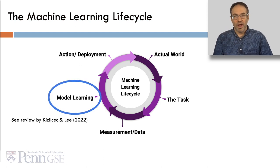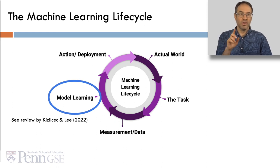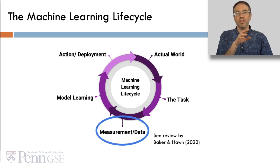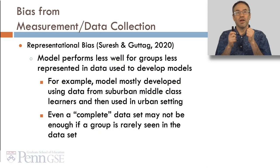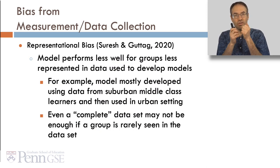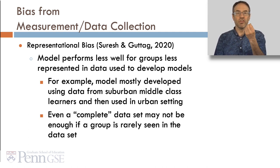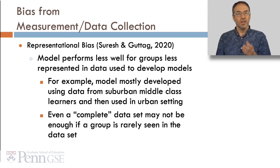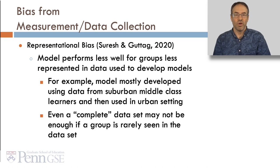A lot of Algorithmic Bias comes from two steps. One is the actual learning of the model, and Kizilchek and Lee have a really nice review of that. The other comes from the data and measurement we put into the model, and Baker and Hahn have a review of that. A key form of bias from measurement and data collection is representational bias, where the model performs less well for groups less well represented in the data used to develop it. For example, a model mostly developed using data from suburban middle-class learners might then be used in an urban setting and might not work as well there.